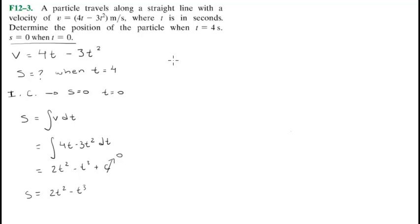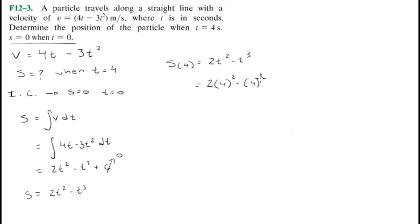Now all you got to do is plug in the value of 4 into our new position equation, which is s. So we get 2 times 4 squared minus 4 cubed. And that comes out to be negative 32. That's the position of the particle when t equals 4, and that's our final answer.